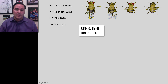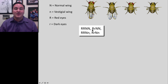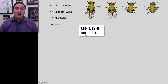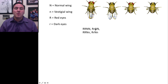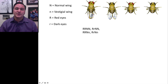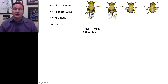So what are the possible genotype combinations for a red-eyed winged fruit fly? They are: big R big R, big N big N; big R little r, big N big N; big R big R, big N little n; and big R little r, big N little n. Those are the four possible genotypes that can result in the red-eyed winged fruit fly phenotype.